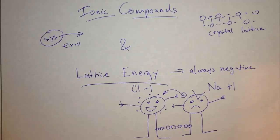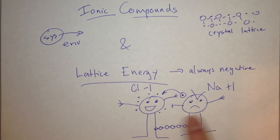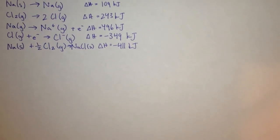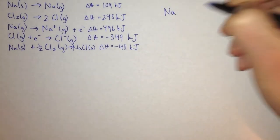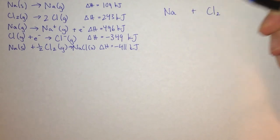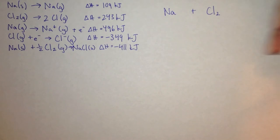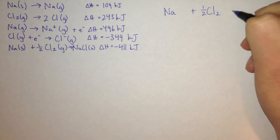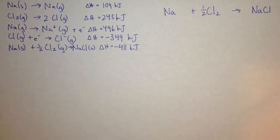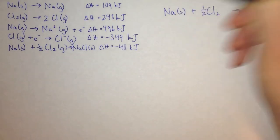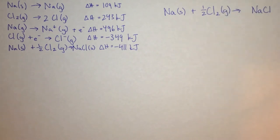Let's try to write an equation for the reaction between sodium and chlorine. We take sodium and chlorine — chlorine comes as Cl2 because it's a diatomic, and we only need one half of it because we only need one chlorine atom — and that gives us one NaCl. At room temperature, sodium comes as a solid and chlorine comes as a gas, and in the end we want a solid NaCl.